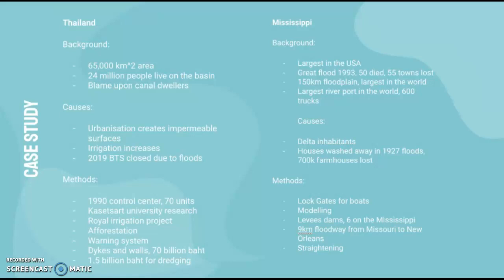For the Mississippi, it's the largest river in the USA. There was a great flood in 1993 where 50 people died and 55 towns were lost. The flood plain is 150 kilometers wide. In the 1927 floods, 700,000 farmhouses were lost. Methods include lock gates for boats, flood prediction models, levees and dams — six dams were built on the Mississippi — a nine-kilometer floodway from Missouri to New Orleans, and river straightening.